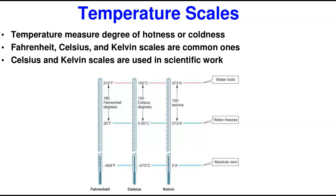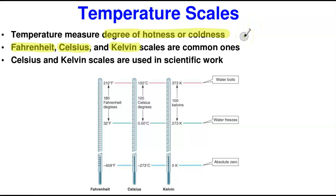Temperature by simple definition measures the degree of hotness or coldness of a body — that is exactly what temperature measures. There are different scales of measuring temperature. The three common scales you will encounter are: Fahrenheit, which is used predominantly in the United States; Celsius, which is used in the metric system; and Kelvin, which is also used in gas laws and the metric system. Celsius and Kelvin are very popular in scientific work — most research and gas law work uses these two.